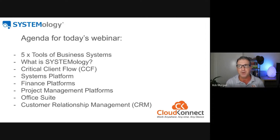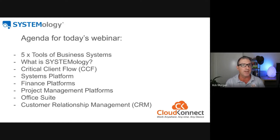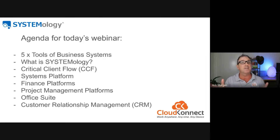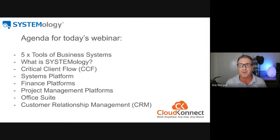We're going to talk about the critical client flow — that's step one in systemizing your business, working out what the critical client flow looks like from the point where you're reaching out to get clients to the point where you're getting new clients. We'll also talk about the systems platform — where do we actually put those processes and systems?